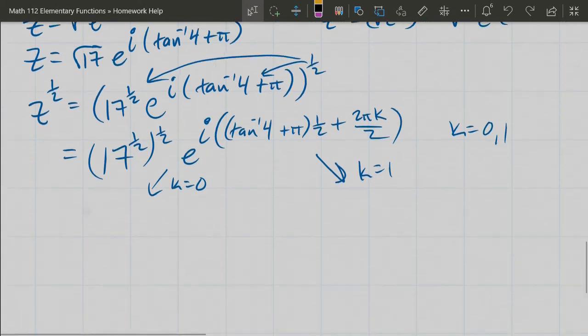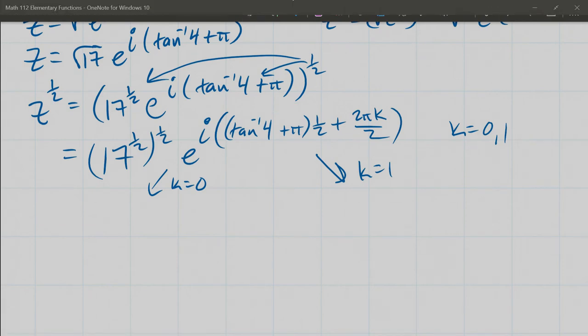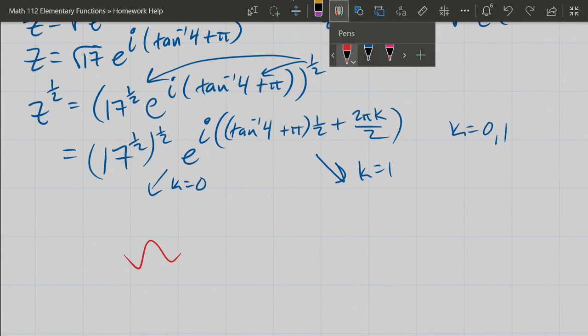There's going to be two solutions here. We have two answers right here: k = 0 and the k = 1 answer. We're going to write them down carefully. We could distribute this 1/2 in right now, but I'll just do it as we go ahead and get our answers here.